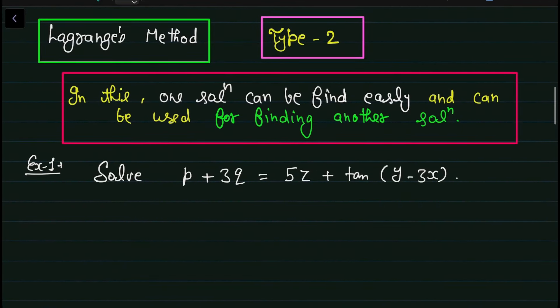Now we move to Type 2. This is different from the method used in Type 1 in the last lecture. In Type 1, we take two fractions and easily integrate directly. In Type 2, one solution can be found easily, and that first solution is then used to find another — the second independent solution.